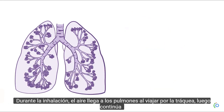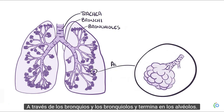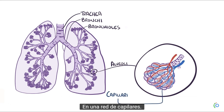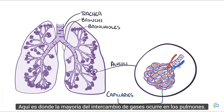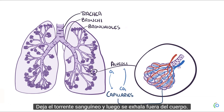During inhalation, air reaches your lungs by traveling down your trachea, then continues through the bronchi and bronchioles and ends up in the alveoli. The alveoli are tiny air sacs that look like tiny clumps of grapes wrapped in a net of capillaries. This is where the majority of gas exchange happens — oxygen crosses into the bloodstream while carbon dioxide is exhaled.